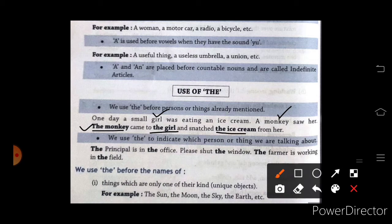Then we write the before them. Snatch the ice cream. Ice cream bhi again repeat hua hai. Jo bhi thing ya person ko pehle mention agar woh sentence mein hai, aur agar usse dubara sentence mein write kiya jata hai, then we use the. We use the to indicate which person or thing we are talking about. Like, the principal is in the office. Please shut the window. Kisi particular thing ki taraf hum indicate, ishara karte hain. The farmer is working in the field.